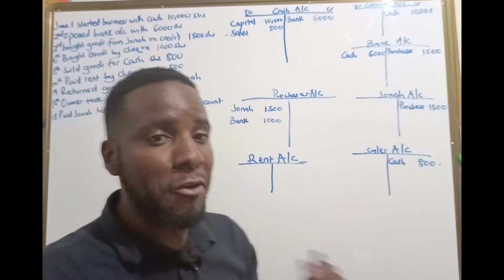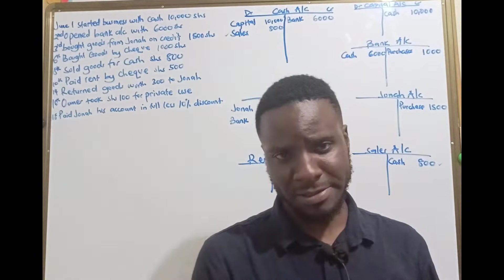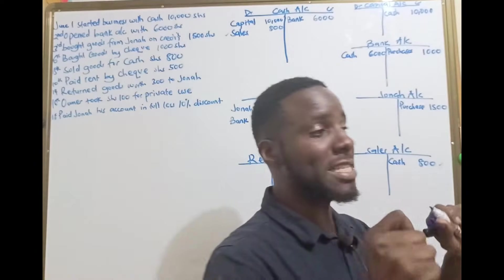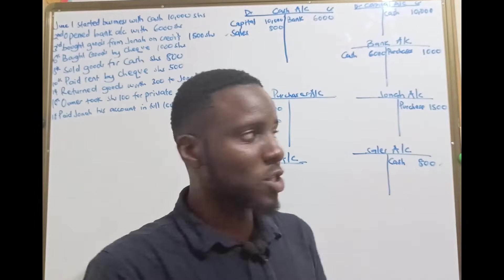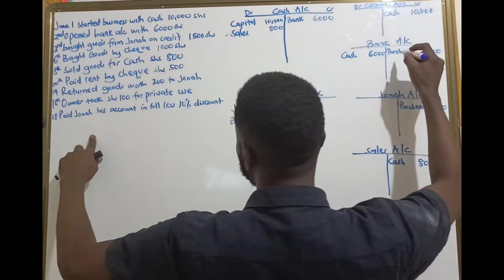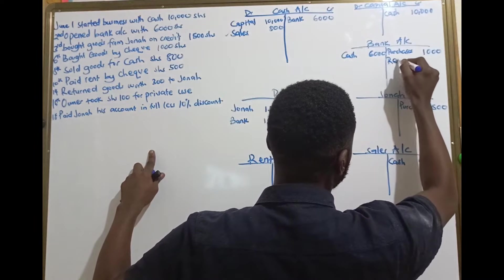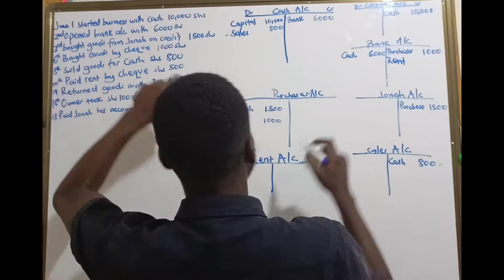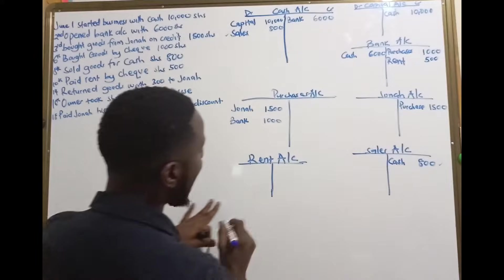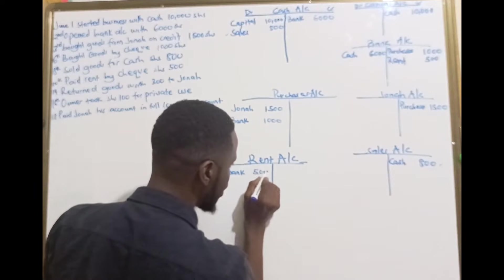They're saying we paid rent by check. If we pay rent, we are losing money — we are giving out money. When money is being taken out of the business, we credit. If it's by check, that means the bank side is going to be affected. So we shall say rent of 500. Therefore when we come to the rent account, we are receiving from the bank worth 500 shillings.